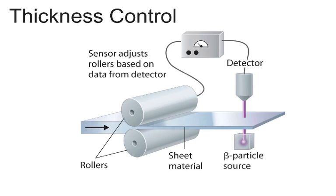One of the other ideas for using radioactivity is in thickness control. If you have some kind of sheet material like paper going through, they have a little source of beta particles. Those beta particles go through to a detector, and if too many get through, that means it's a little bit too thin, and it tells the rollers to separate from each other. If not enough of them are getting through, that means it's too thick, and it tells the rollers to go a little closer to each other. This can be done very, very quickly as the material goes through the rollers.